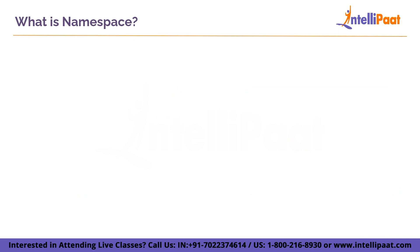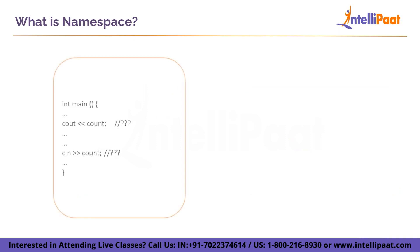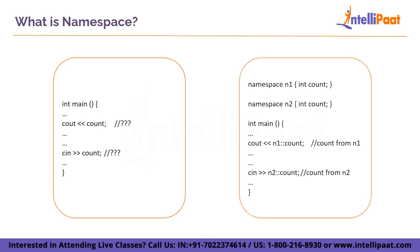Besides this, there is one more application of namespace. For instance, imagine you named a variable 'count' in one part of your code and another variable named 'count' in a different part of your code. The compiler has no way of knowing which count variable you are referring to. At this point, namespace comes into help. They store identifiers with the same name in different namespace areas, removing the confusion for the compiler.